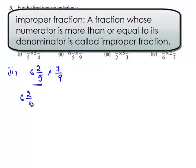Therefore, 6 2/5 is written as (5 times 6 plus 2) divided by 5, which equals 32/5.